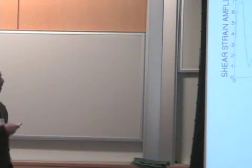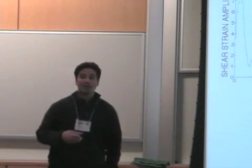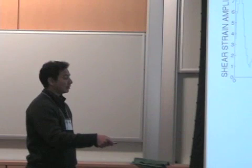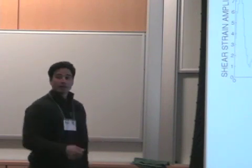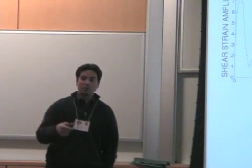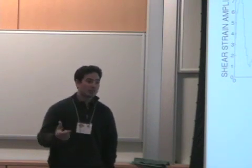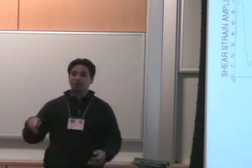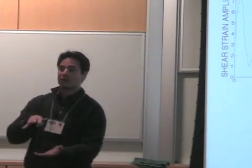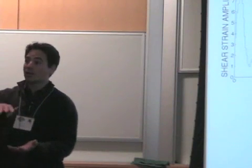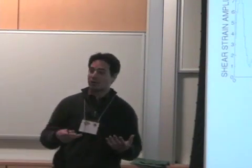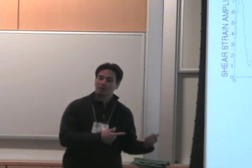If you start to ask about energy dissipation in the tissue, what that's telling you is that since energy dissipation goes like the loss modulus times the strain amplitude squared, this weak region ends up being where almost all of the energy is absorbed in the tissue. We know that cartilage absorbs energy and shocks that are applied between bones, but where in the cartilage is this energy absorbed? The answer is in this weak region right below the surface.